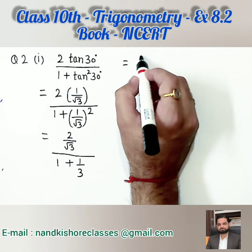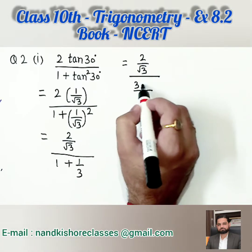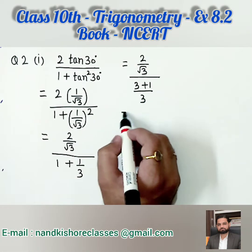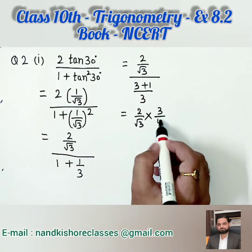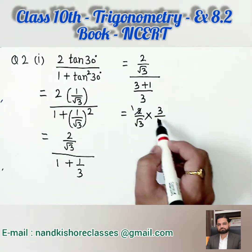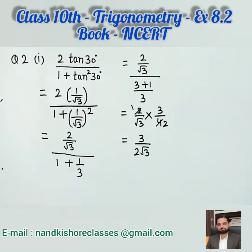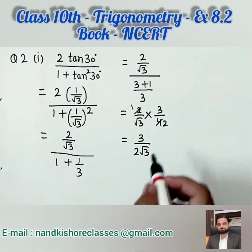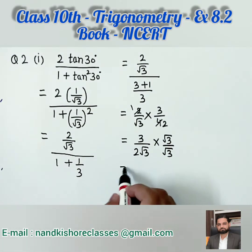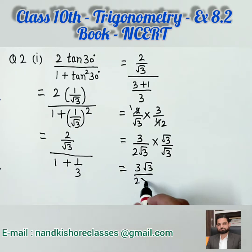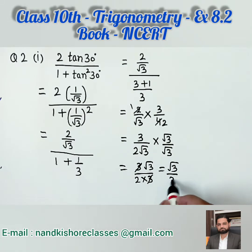What next will it become? 2 by root 3 over — 3 will be the LCM, giving 3 plus 1. Then 2 by root 3 — this 3 will go to the top and 3 plus 1 remains 4. So we get 3 upon 2 root 3. I hope you are clear till this step. Now we need to rationalize: multiply by root 3 over root 3. We get 3 root 3 upon 2 times root 3 into root 3, which is 3. So 3 and 3 cancel, and our answer is root 3 by 2.